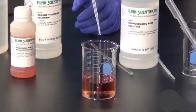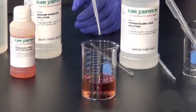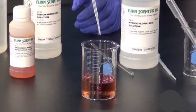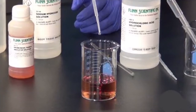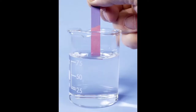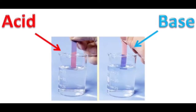If we cannot taste every substance, how do we find its nature? Special types of substances are used to test whether a substance is acidic or basic. These substances are known as indicators.